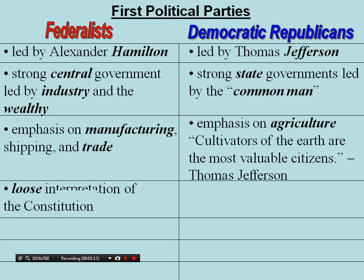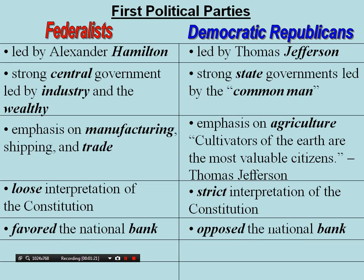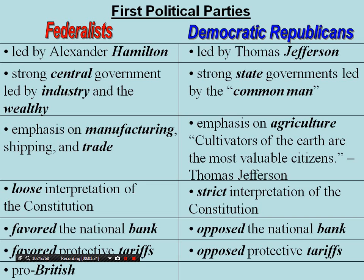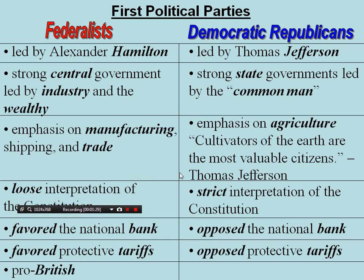Federalists, led by Alexander Hamilton, wanted a strong central government, led by industry and the wealthy, with emphasis on manufacturing, shipping, and trade. They held a loose interpretation of the Constitution, favored a national bank, had protective tariffs, and were pro-British.